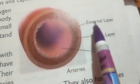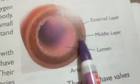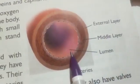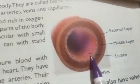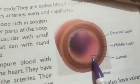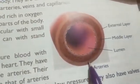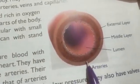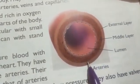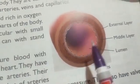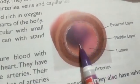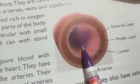Each artery is made up of three layers: the external layer, the middle layer, and the inside layer called the lumen. Arteries have a thick layer because the heart directly pumps blood into them with great pressure, so arteries have a very thick layer.